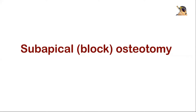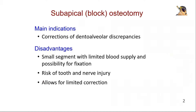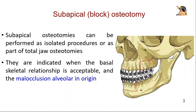Bismillah ar-Rahman ar-Rahim. Assalamu alaikum. In this video, we will explain subapical or block osteotomy. It is mainly used for corrections of dento-alveolar discrepancies. Subapical osteotomies can be performed as isolated procedures or as part of total jaw osteotomies. They are indicated when the basal-skeletal relationship is acceptable and the malocclusion is alveolar in origin.